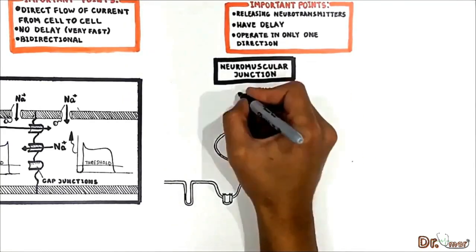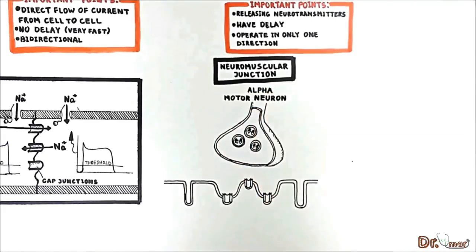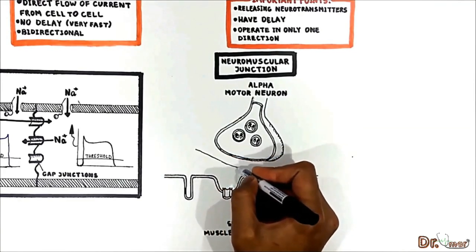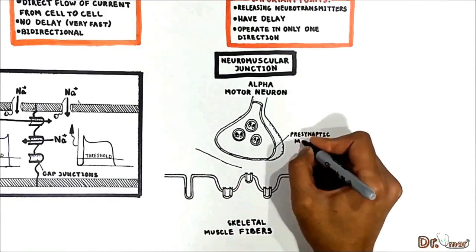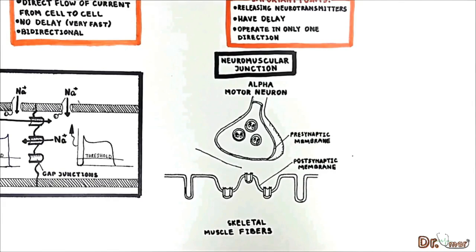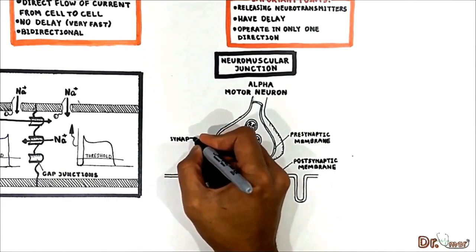It is very important to know that alpha motor neurons communicate with skeletal muscle fibers at specialized synapses called neuromuscular junction. This gap between the pre-synaptic and post-synaptic membrane which is a part of skeletal muscle is called the synaptic cleft.